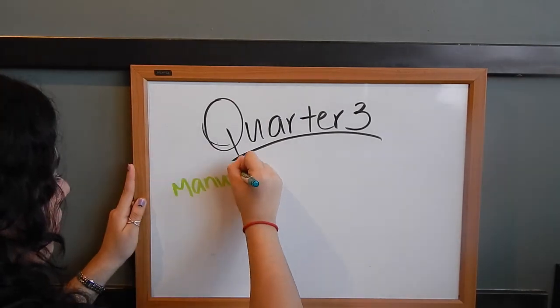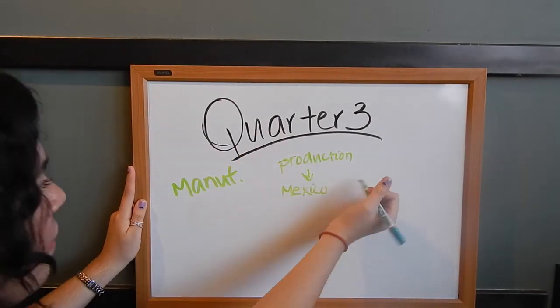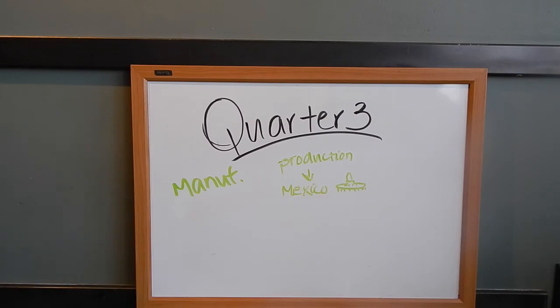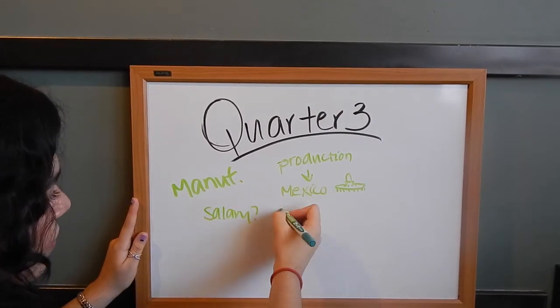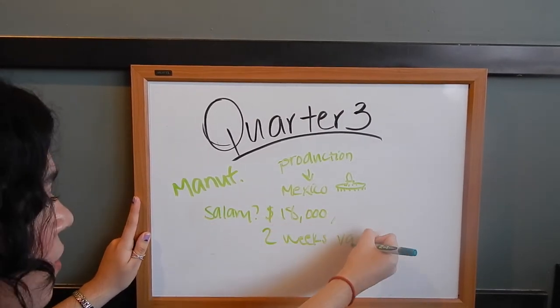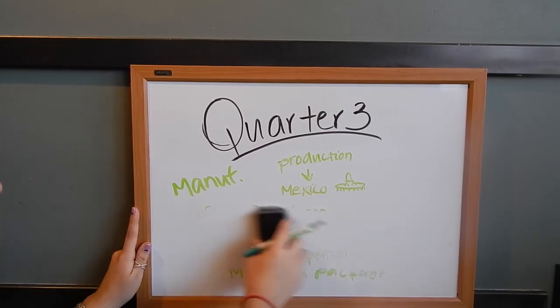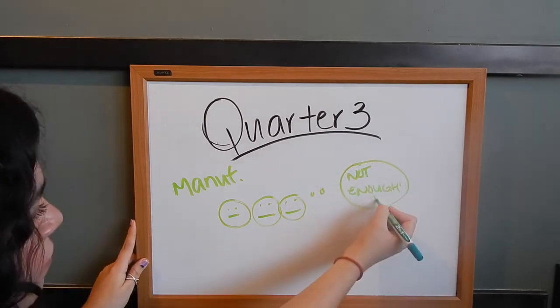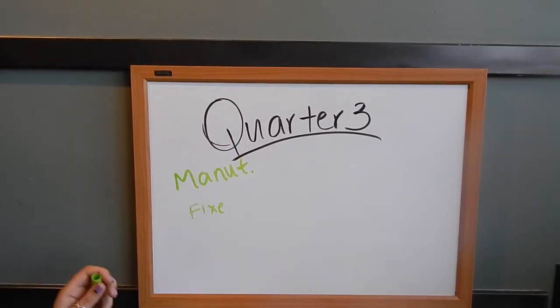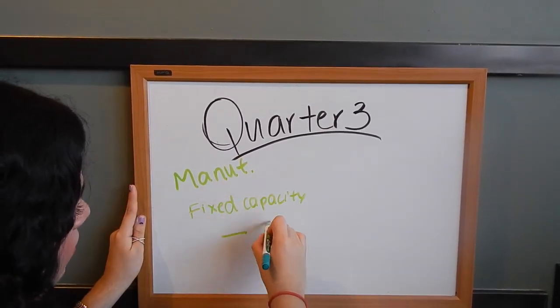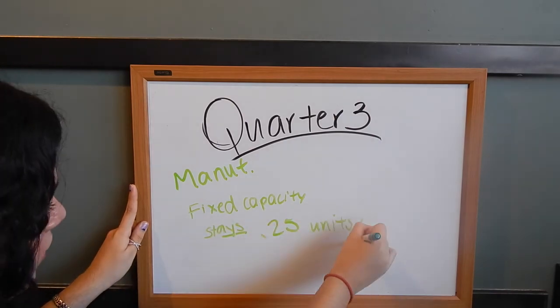Our manufacturing facility was set up in Mexico City. Our production employees had a salary of $18,000, two weeks vacation, 9% pension, and minimum health coverage. AKA, they were not happy. Forgot to mention, but our fixed capacity was set up to 25 units per day.